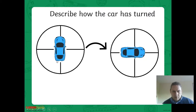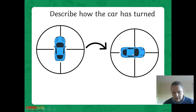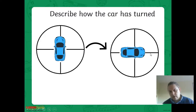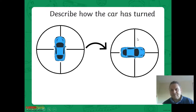Remembering our work from yesterday, we know that that's clockwise. And how much of a turn have we done here? We've done a quarter of a turn. So we've turned a quarter in a clockwise direction - a quarter turn clockwise.